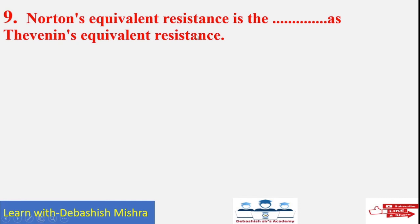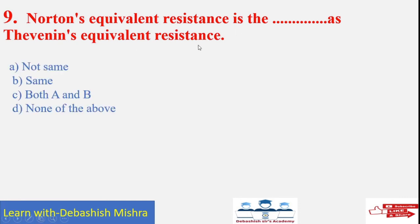Is Norton's equivalent resistance the same as Thevenin's equivalent resistance? The options are: not same, same, both A and B, or none of the same. Because we calculate RTH using the same process — shorting voltage sources and opening current sources — the process is the same in both theorems. So B is the correct answer: they are the same.